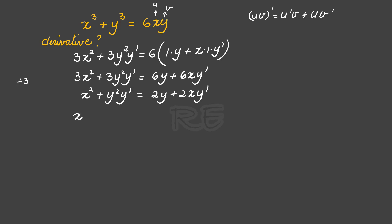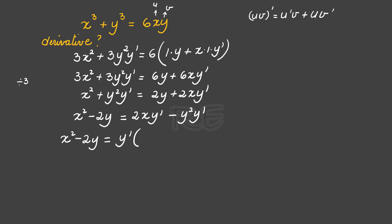Now we are going to collect the terms without y prime. We move 2y to the other side: x squared minus 2y. Then we collect the terms with y prime: 2xy prime, and we move y squared y prime to the other side, giving negative y squared y prime. So x squared minus 2y equals y prime times the quantity 2x minus y squared. To isolate y prime, we divide both sides by 2x minus y squared, giving x squared minus 2y divided by 2x minus y squared equals y prime.